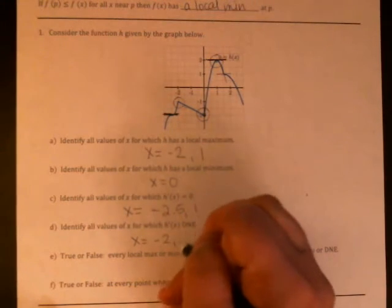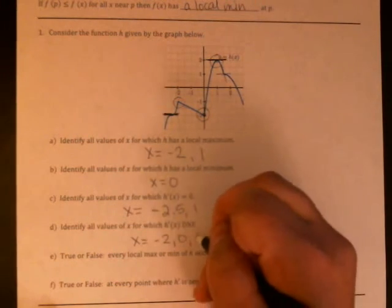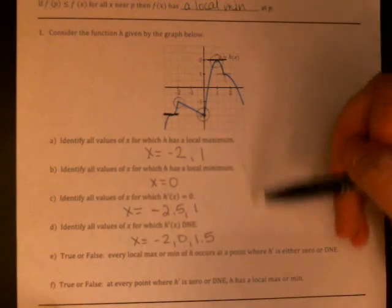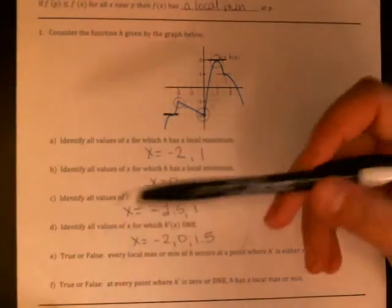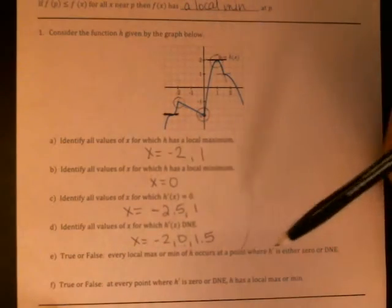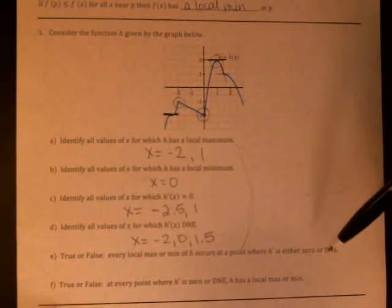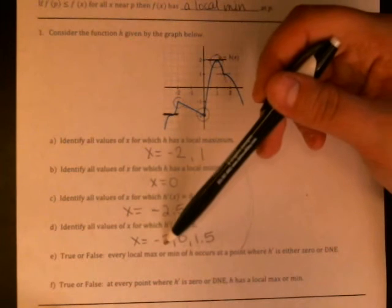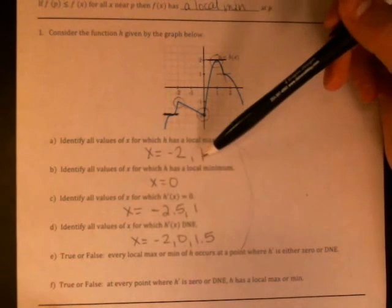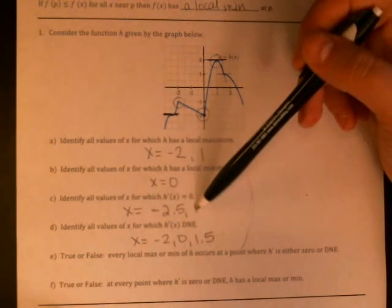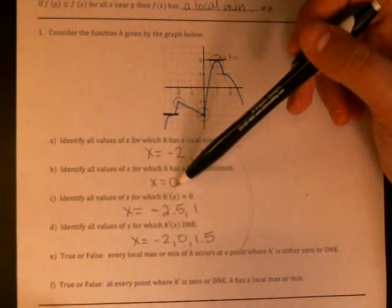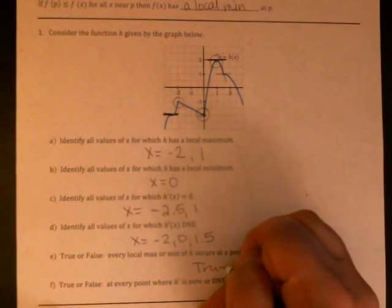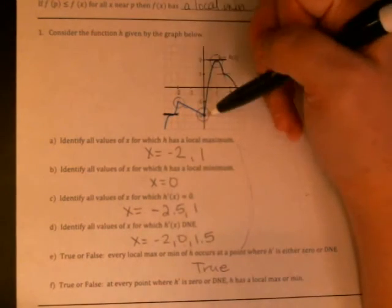Okay so now we're supposed to look back at this and make some connections. True or false: every local max or min occurs at a point where h prime is either zero or does not exist. So negative two was a max and that was when the derivative did not exist. One was a max and that was when the derivative was zero. Zero was a min and that was does not exist. So that appears to be true. Each of my max and mins happen at a point where the derivative is either zero or undefined, either a corner or a little flat spot like this.